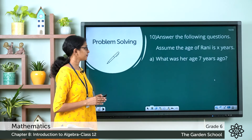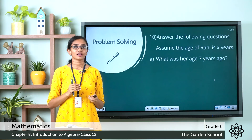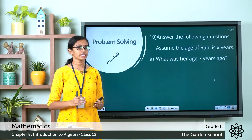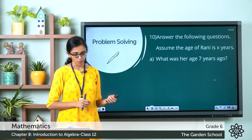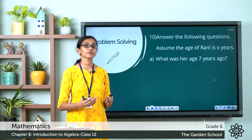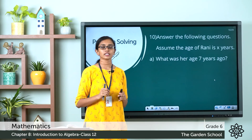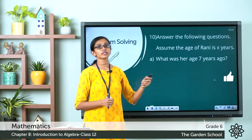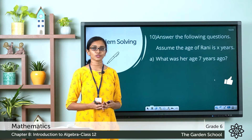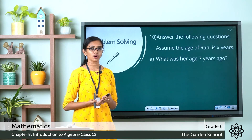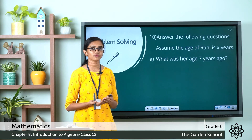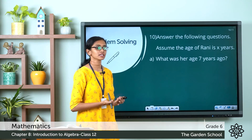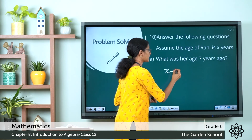Now let's see question 10: answer the following questions. Assume that the age of Rani is X years. The first question asks: what was her age 7 years ago? If Rani's age is X years now, her age 7 years ago would be 7 less than X. How do we write 7 less than X? That would be X minus 7.